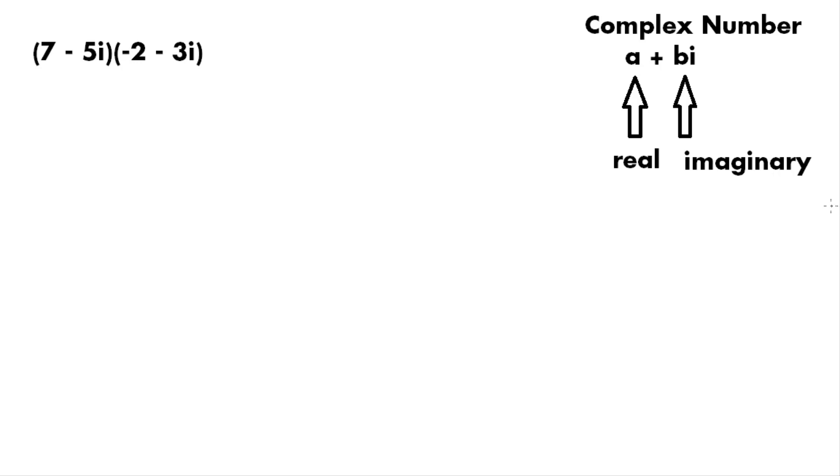In this video we're going to talk about multiplication of two complex numbers. As we discussed in a previous video, a complex number is a number that has a real part and an imaginary part. An imaginary part is always followed with an i.